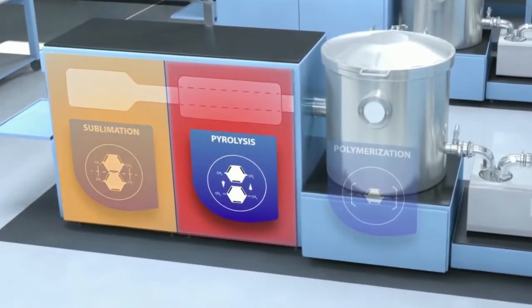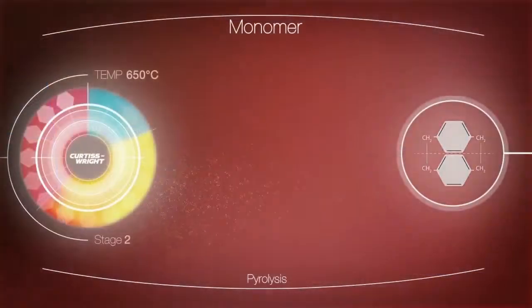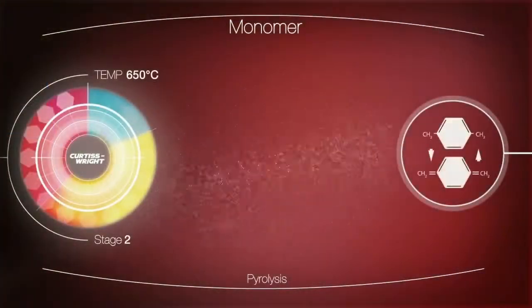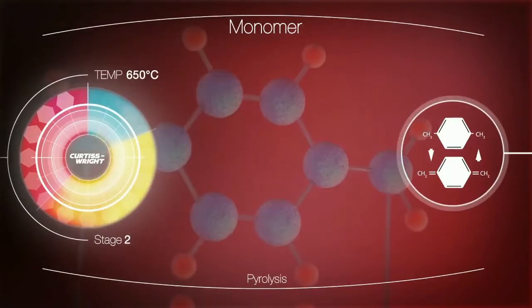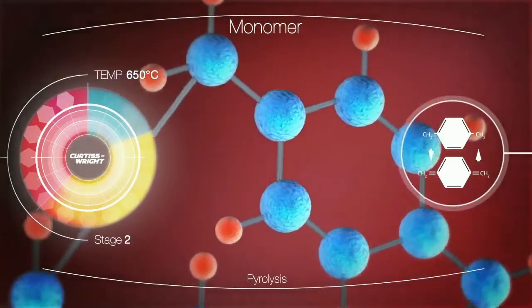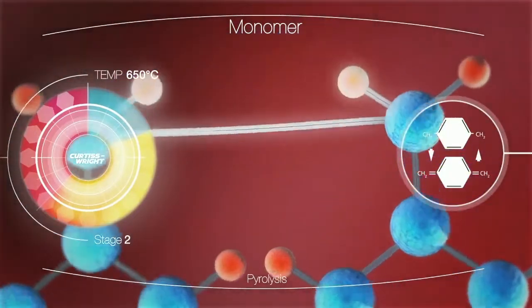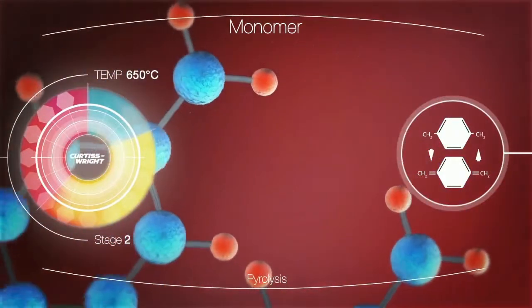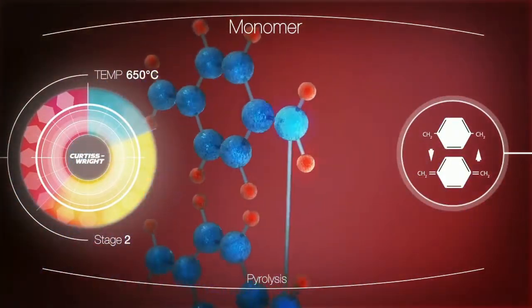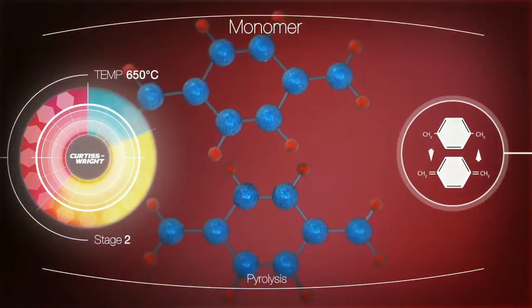The second stage is pyrolysis, where the gaseous dimer is heated in a furnace. As the temperature rises, the molecular structure changes and it begins to crack or break down. At over 650 degrees Celsius, the dimer is cleaved or split into monomers.